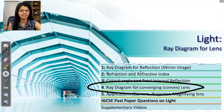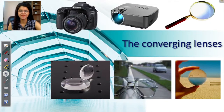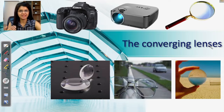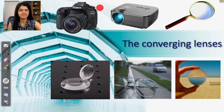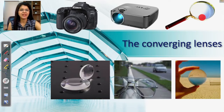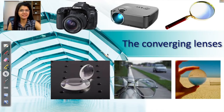Before we start, what is a convex lens? A convex lens is a converging lens — converging means it converges light. Converging lenses have their applications in cameras, mobile cameras, mainstream cameras, projectors in your classrooms, magnifying glasses, and the spectacles that you wear — they are all examples of converging lenses.